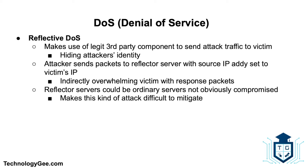The first type is a reflective denial of service attack. A reflective DoS attack makes use of a potentially legitimate third-party component to send attack traffic to a victim, ultimately hiding the attacker's own identity. The attacker sends packets to a reflector server with a source IP set to their victim's IP, therefore indirectly overwhelming the victim with response packets. Reflector servers used for this purpose could be ordinary servers not obviously compromised, which makes this kind of attack particularly difficult to mitigate.